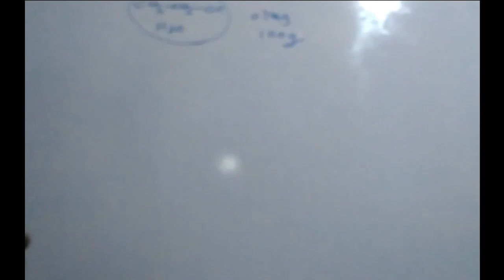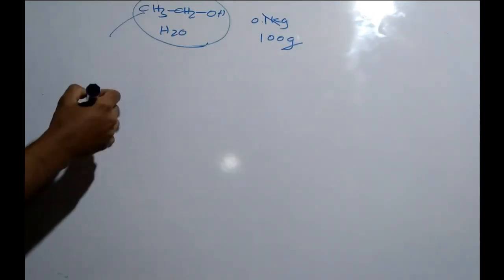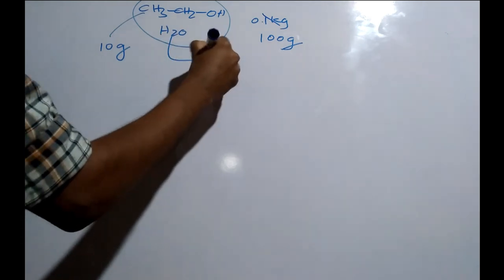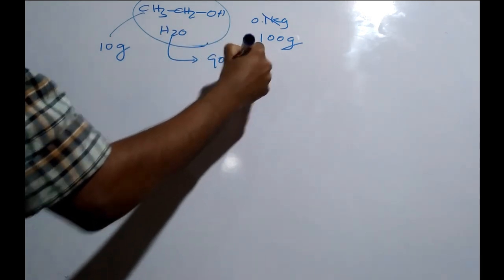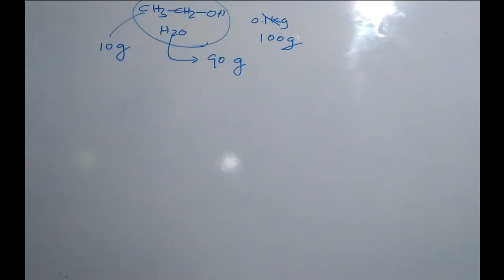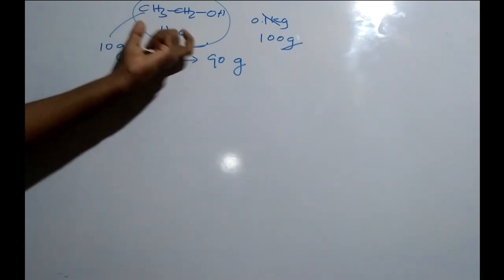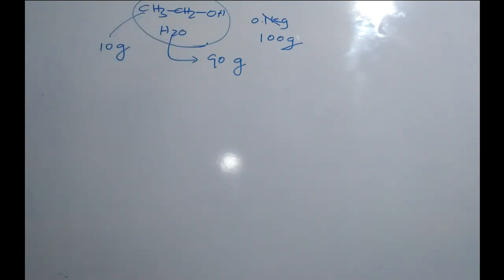Now, you can see that with this one, the ethanol is 10 grams of water, and the water is 90 grams of water. Sorry, you know that the ethanol is 10 grams of water, and the water is 10 grams of water.